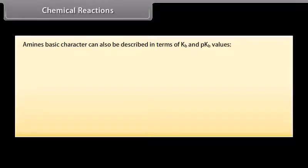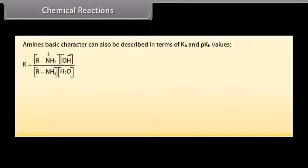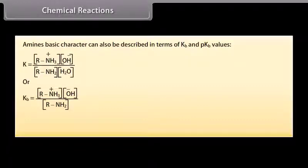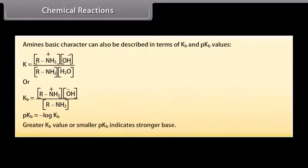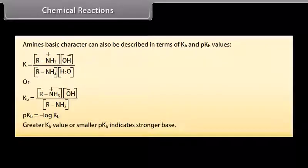Amines' basic character can also be described in terms of Kb and pKb values. The value of Kb can be written from which the value of Kb can be inferred. pKb is equal to the negative logarithm of Kb. A greater Kb value or smaller pKb indicates a stronger base.